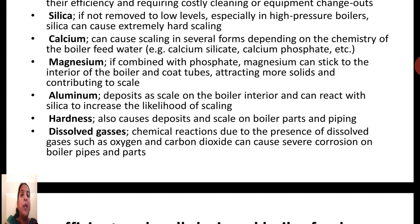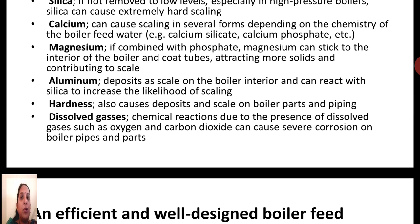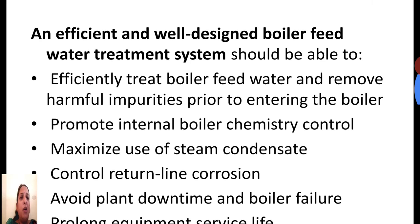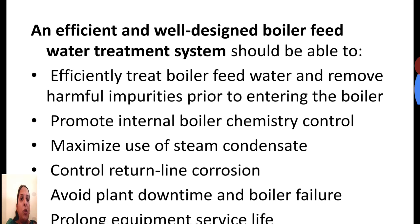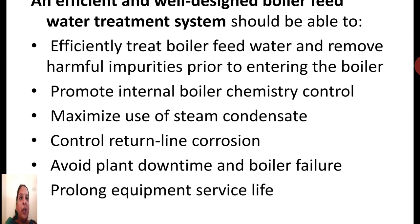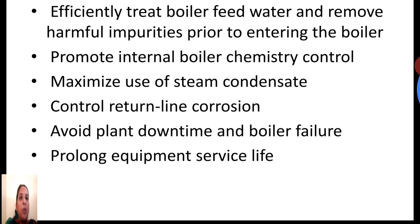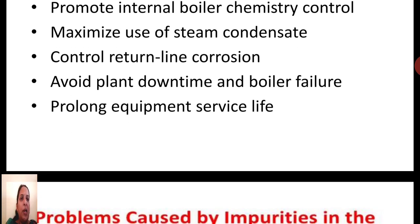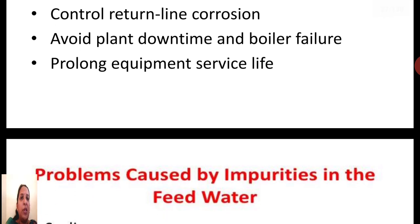Magnesium combined with phosphate can stick to the interior of the boiler and core tubes, attracting more solids and contributing to scale. Aluminum causes scaling on the boiler interior and reacts with silica to increase the likelihood of scaling. Hardness always deposits and forms scale on boiler parts and pipes. Dissolved gases like oxygen and carbon dioxide can cause severe corrosion on both boiler pipes and parts. An efficient, well-designed boiler water treatment system should treat the feed water to remove harmful impurities, promote internal boiler chemistry control, maximize use of steam condensate, control return line corrosion, avoid plant downtime and boiler failure, and prolong equipment service life.